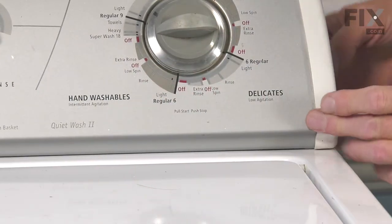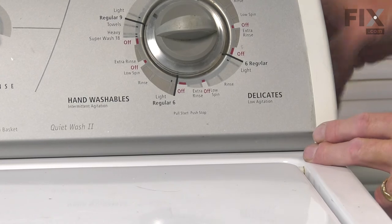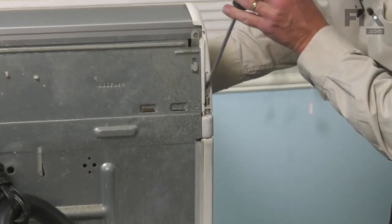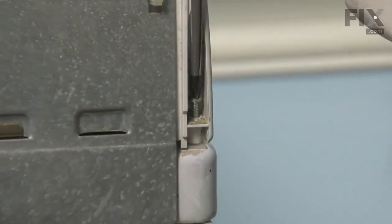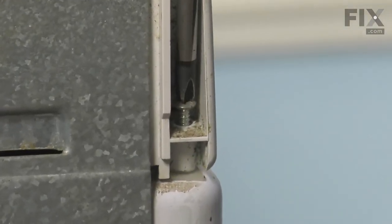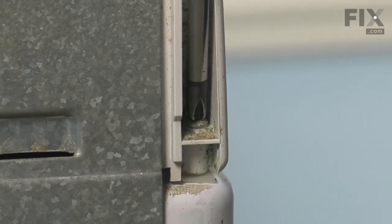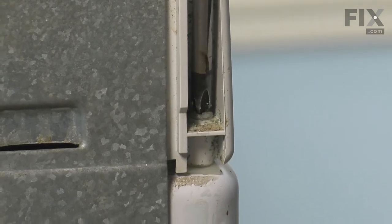Now, with it pressed back firmly, we'll then tighten the two screws to secure the console to the cabinet. If the console is in the right position, the screw will go right down into that nylon insert. Do the same for the opposite side.